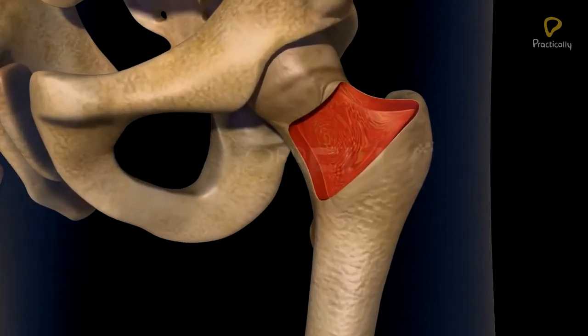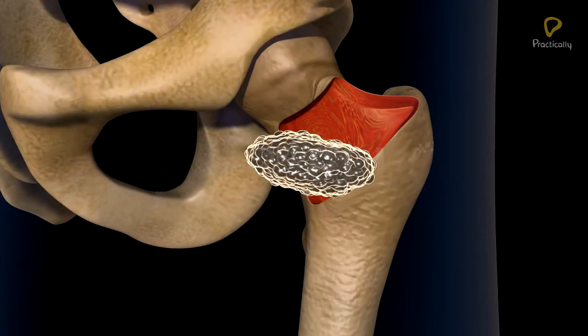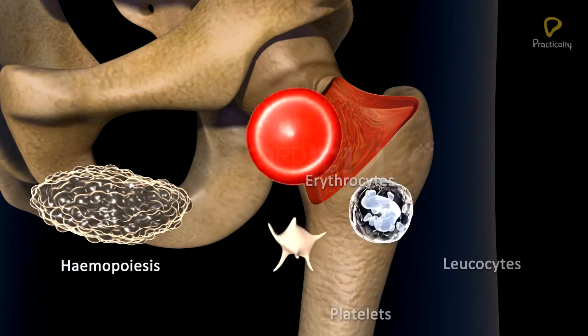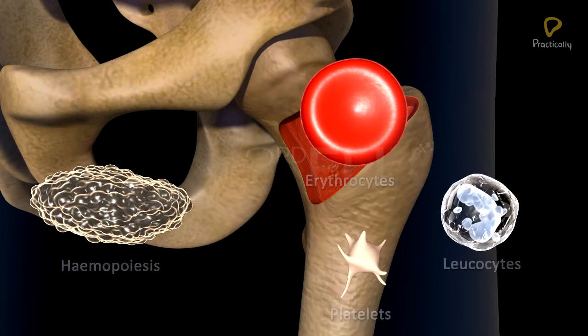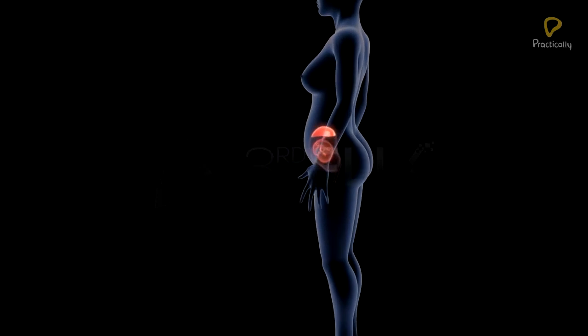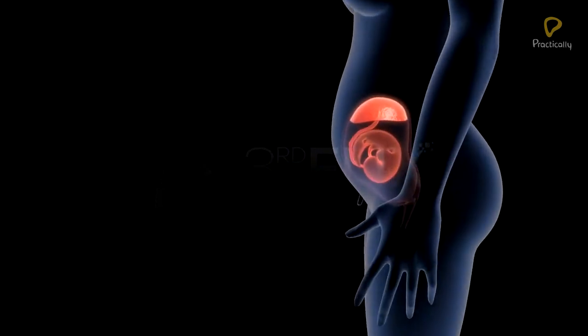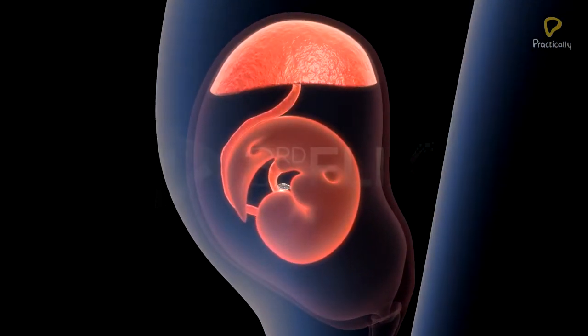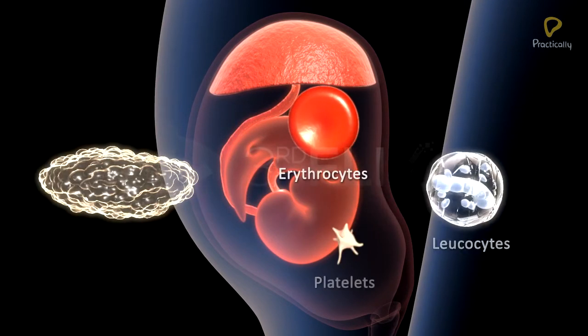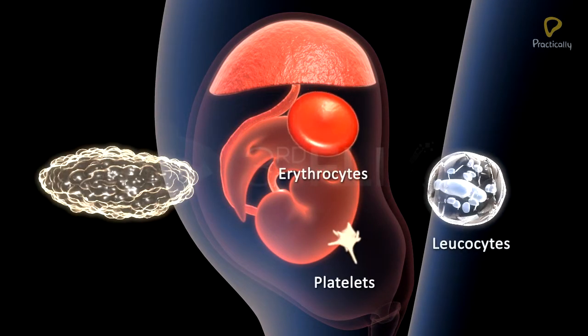The process of formation of blood cells is known as hemopoiesis. In the early stages of embryogenesis, blood cells are formed from the yolk sac mesoderm.